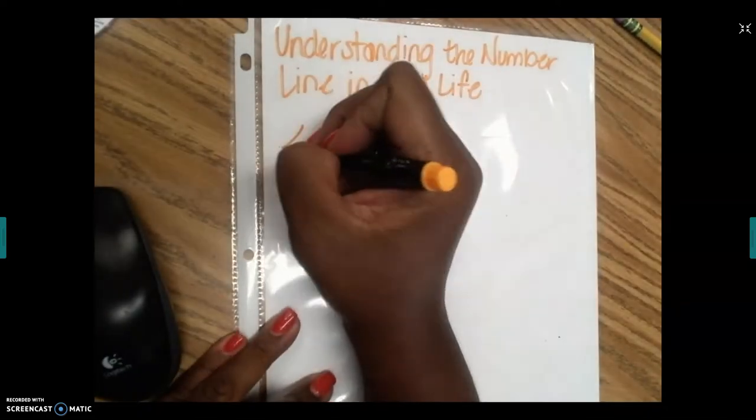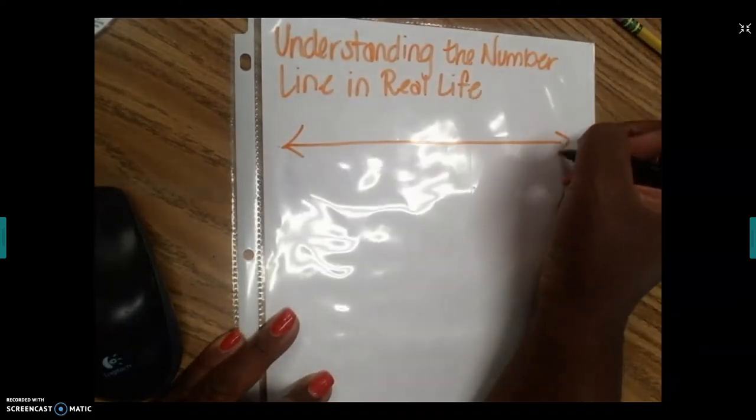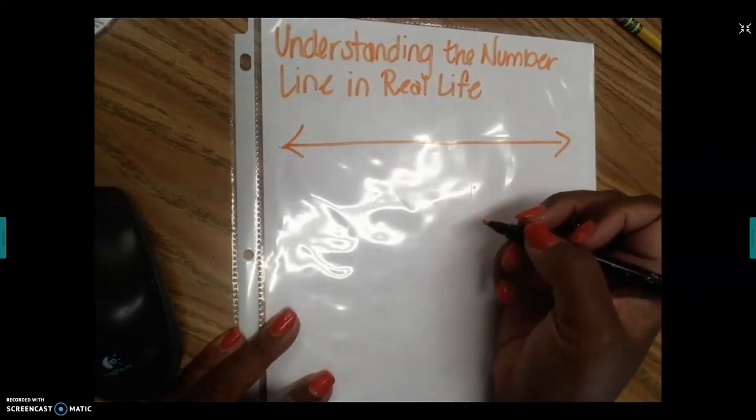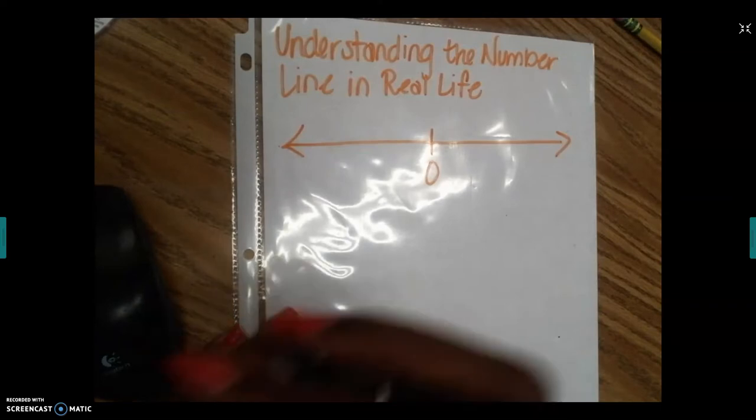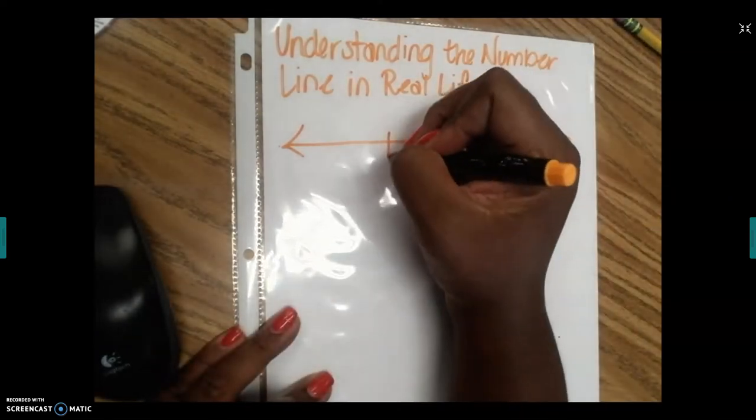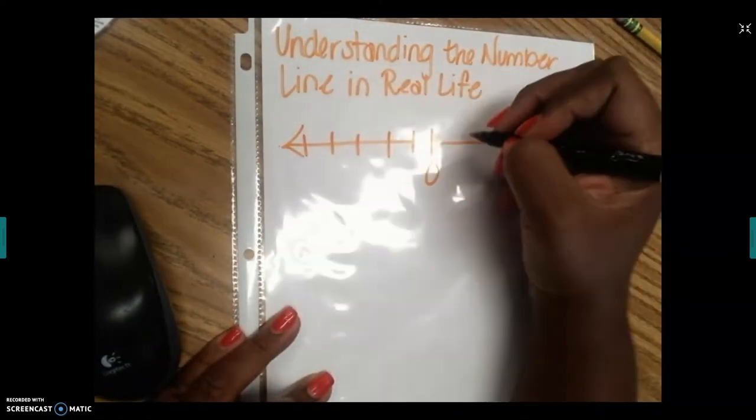You need to understand that a number line, as you remember from elementary school, is not only going to tell us a number's position from zero, but it also helps to introduce to us negative numbers.